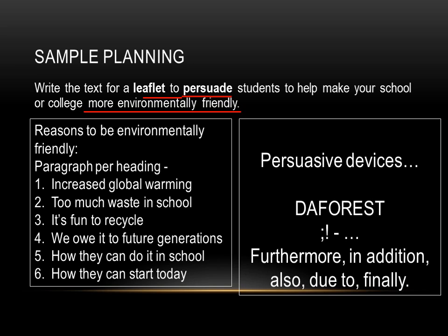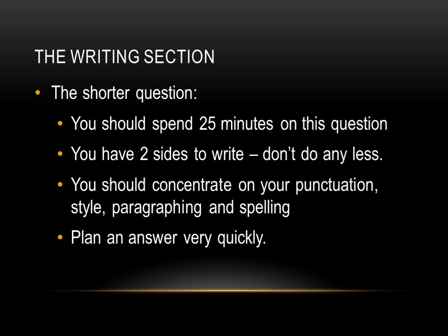I've then added persuasive devices — I know the FOREST acronym for writing to persuade, and we'll go through that in a moment. I've also noted key higher punctuation marks: semicolon, exclamation mark, dash, and ellipsis, to remind me to use those in my writing. I've also listed some connectives to use at the start of paragraphs. Planning doesn't take long but it is important because it helps you remember the features needed for a C grade and helps organize your work, which we are marked on.